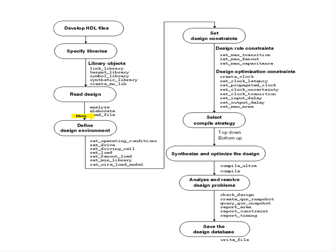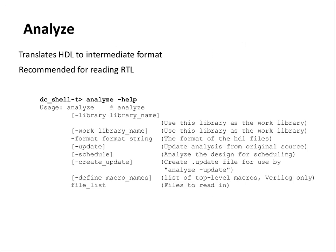Assuming you have RTL files ready, the first important command is 'analyze'. It translates HDL into an intermediate format internal to Design Compiler. This command is recommended for reading RTL — this is very important. When you want to read RTL, this is the command you should use first. Any command in Design Compiler — you can get help by using 'analyze -help', which tells you what options are available.